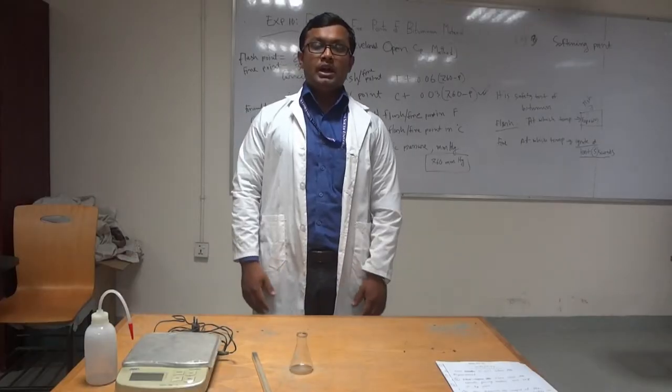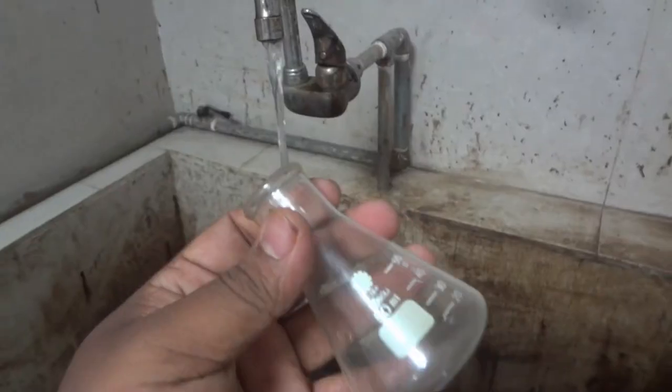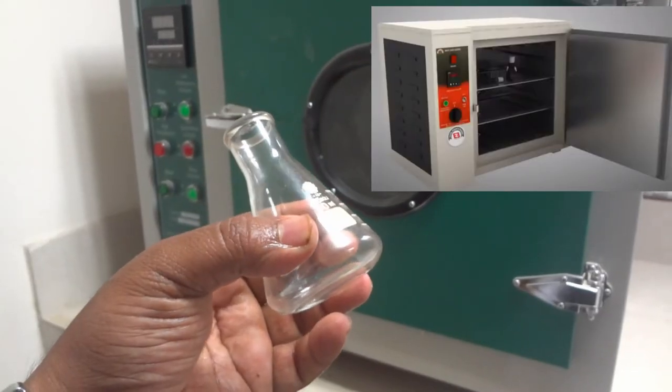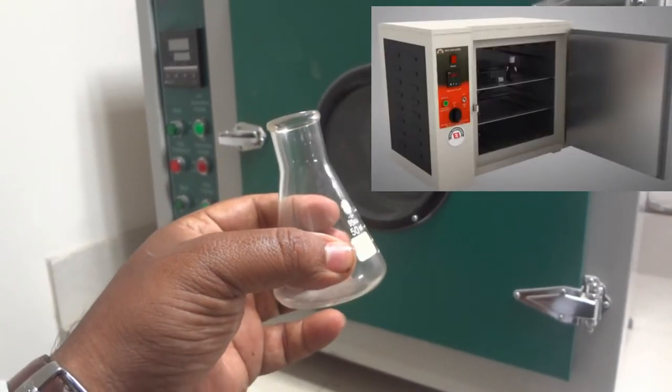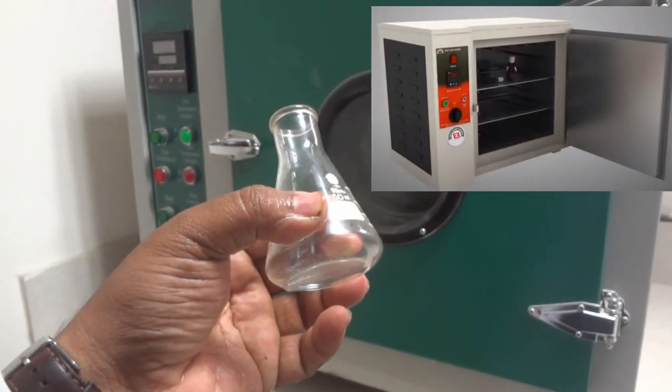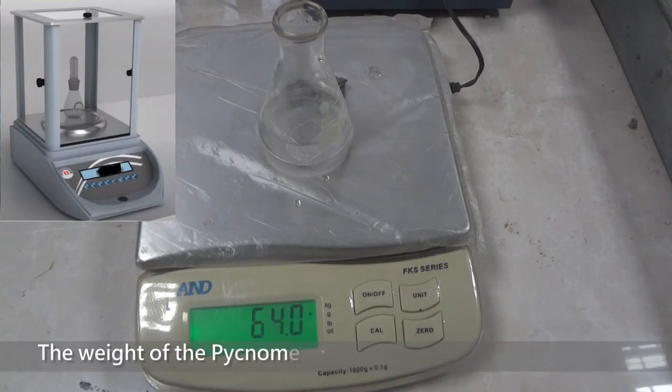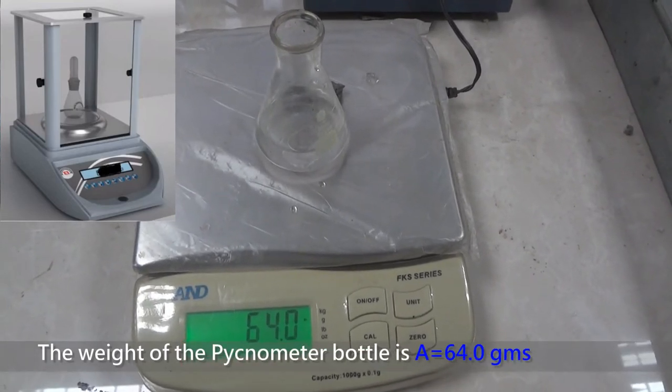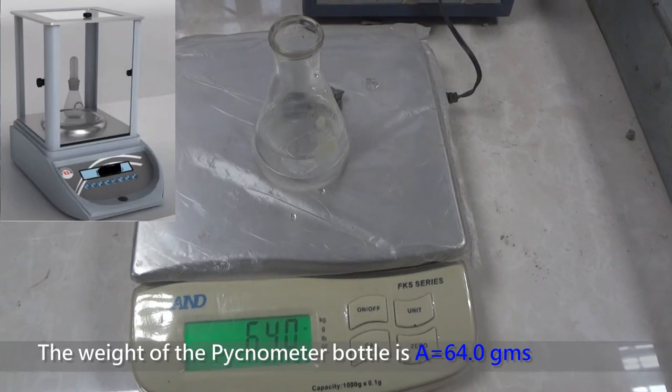Now I will start the experiment. Clean the pycnometer bottle. After cleaning the pycnometer bottle, place in the oven to dry. Now measure the weight of pycnometer. The weight of pycnometer is 64 grams, which is A.